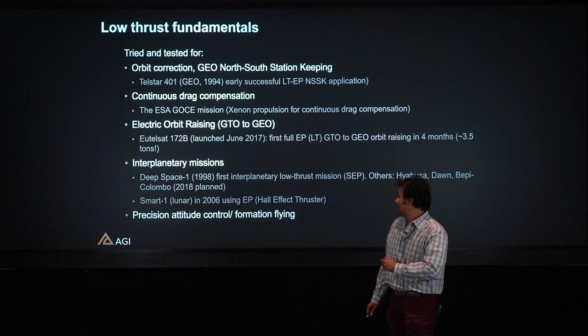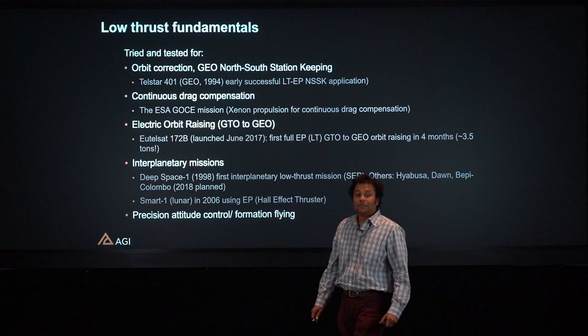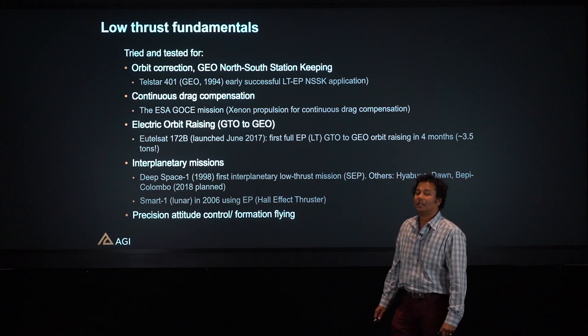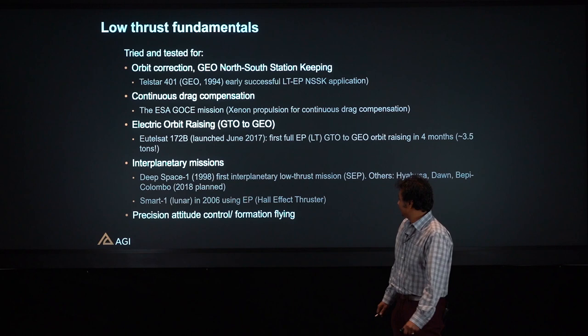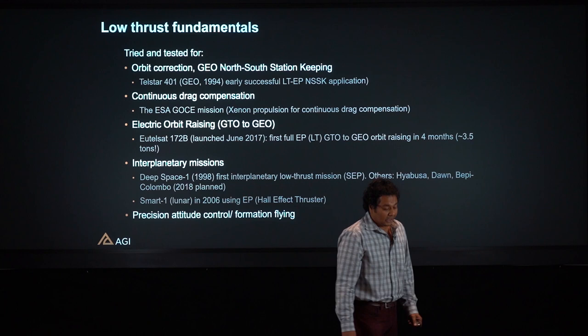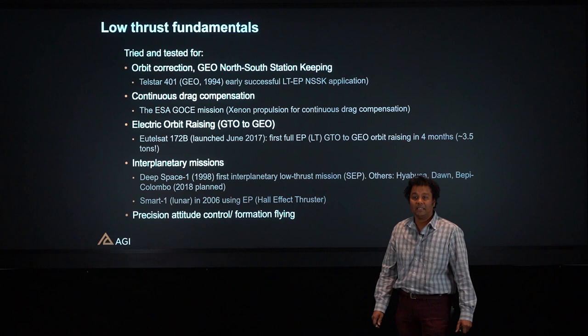There was the EUTELSAT-172B mission, an ESA mission that flew in 2017 — it's the world's first full electric propulsion mission that took about four months for orbit raising with tons of payload. And there were, of course, interplanetary missions. One of the more well-known interplanetary missions was the Deep Space mission, which took place in 1998. There have been others since that time — Bepi-Colombo is planned for 2018.